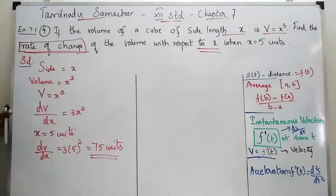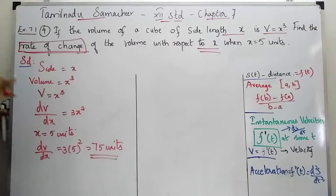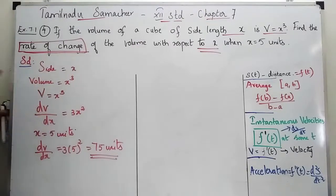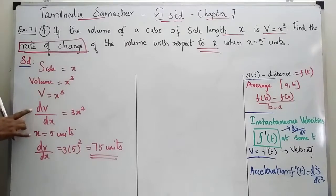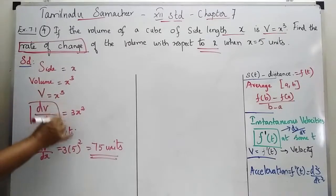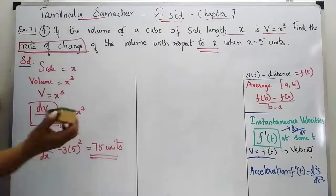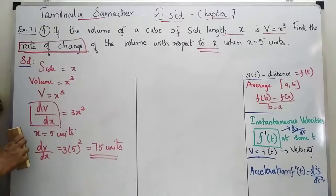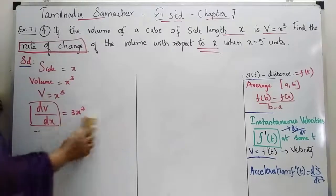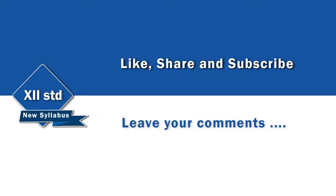Problem clear. Rate of change of volume with respect to x — that is dV/dx — at x equal to 5, we are getting 75 units.